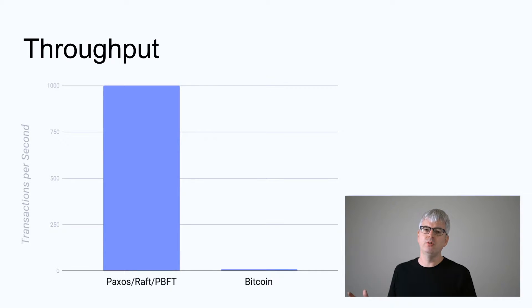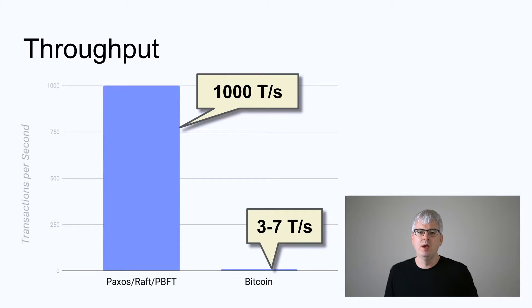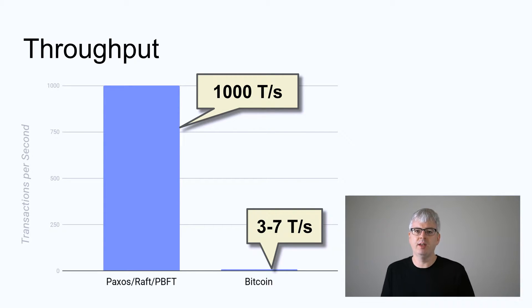So let's compare those two classes of algorithms: the blockchain consensus algorithms, such as Bitcoin's proof of work or Ethereum's proof of stake, and the classic consensus algorithms — Paxos, Raft, and PBFT. Let's start by looking at performance, beginning with throughput. A Paxos instance could easily be set up to handle a thousand transactions per second or even more. You set up your system to handle one Paxos round per second, and in each of those rounds, you commit a thousand transactions. Done.